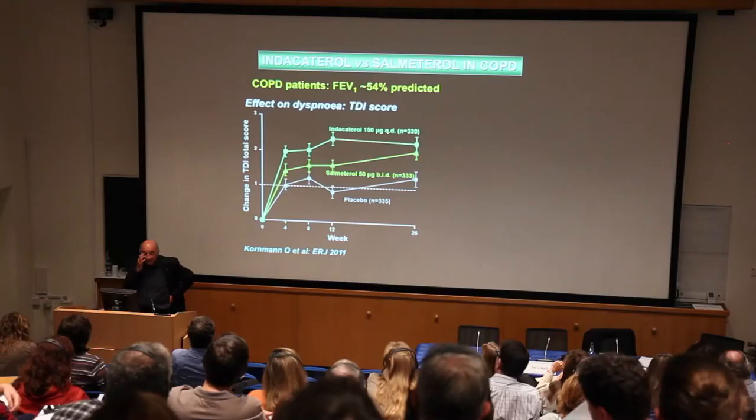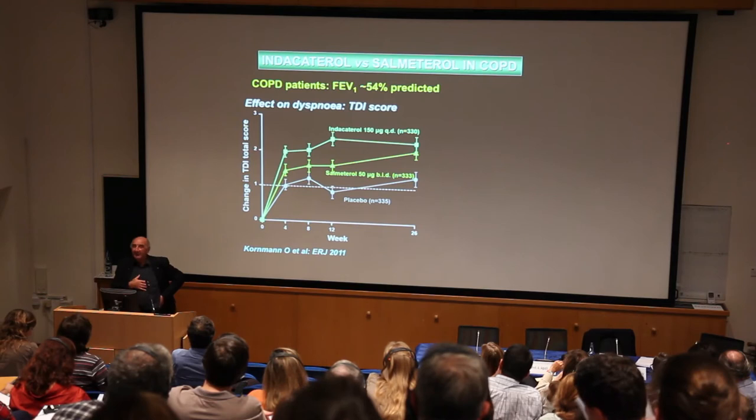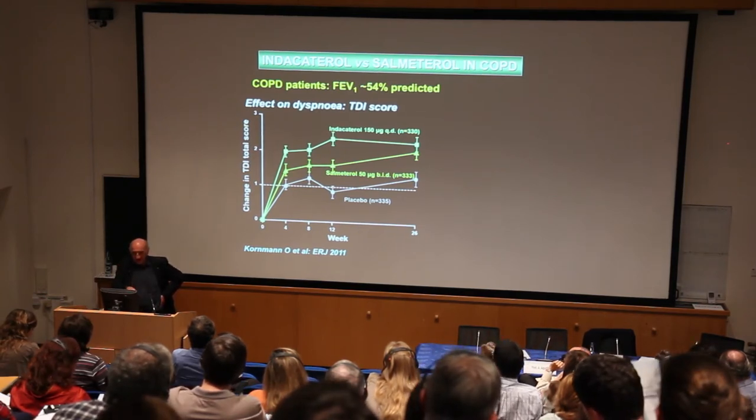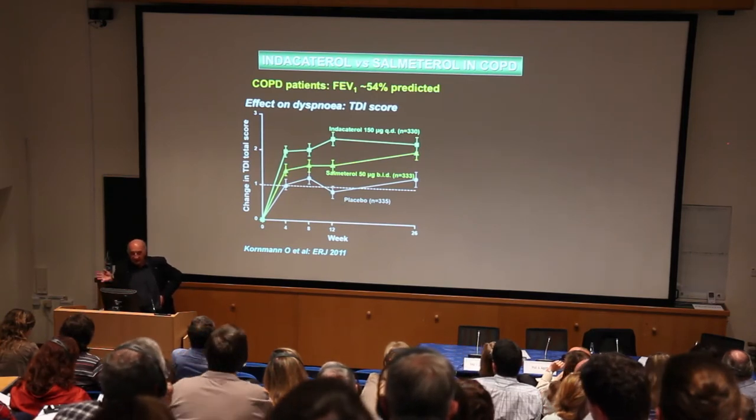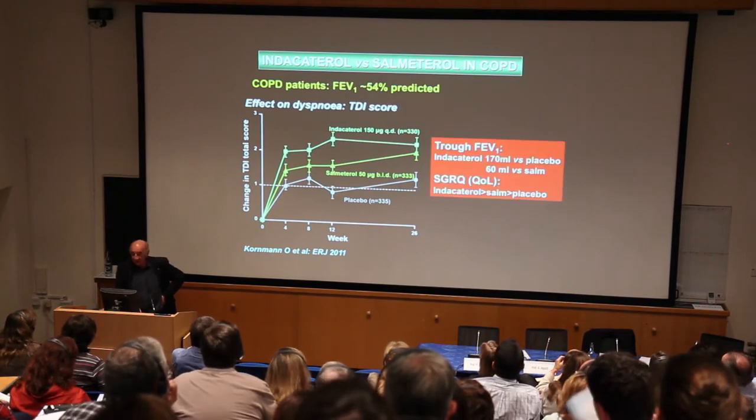It looked like the first choice should be a LAMA compared with a LABA. But this is not the correct interpretation, because we now know that the duration of action is more important than the class of bronchodilator. When indacaterol came along as the first once-daily beta agonist, compared with salmeterol twice a day, it was better in terms of symptoms, lung function, and quality of life. The reason is that because indacaterol lasts over 24 hours it persists, whereas salmeterol wears off before the next dose, meaning more symptoms.